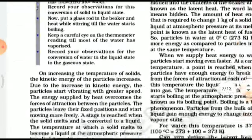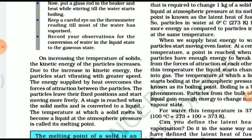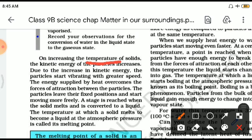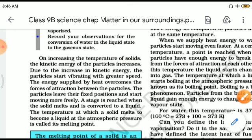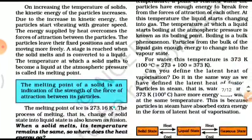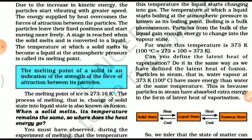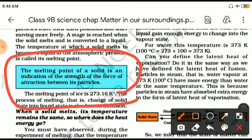Matter changes state because there is a change in temperature - that is the keyword here. If temperature increases, matter changes into gaseous state. If temperature cools down, water becomes ice - from liquid we get solid. The melting point of a solid is an indication of the strength of the force of attraction between its particles. If the force of attraction is very high, it will melt at a very high temperature; if weak, at a very low temperature.